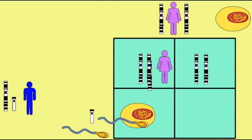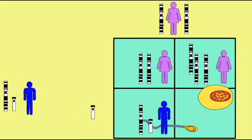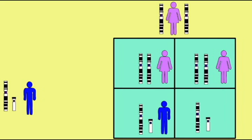Since all ova possess an X chromosome, whether a sperm carries an X or a Y will determine whether an embryo is XX and female, or XY and male.